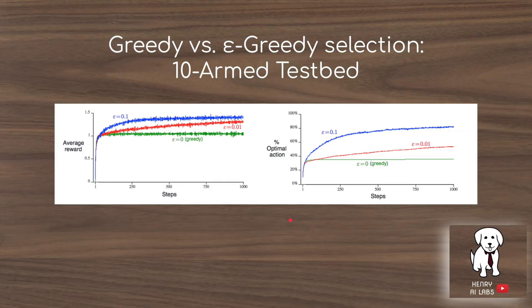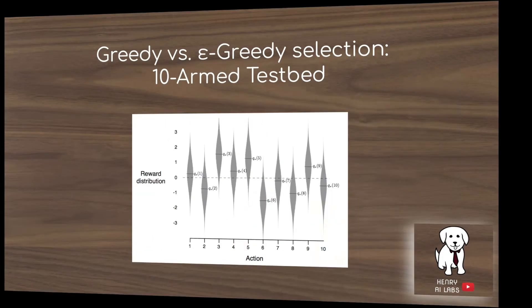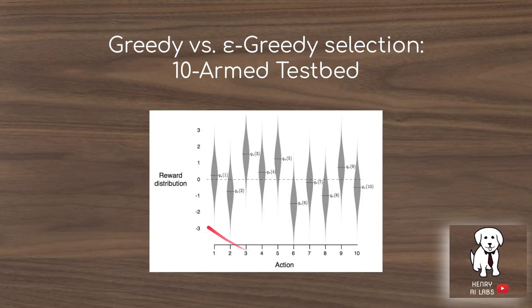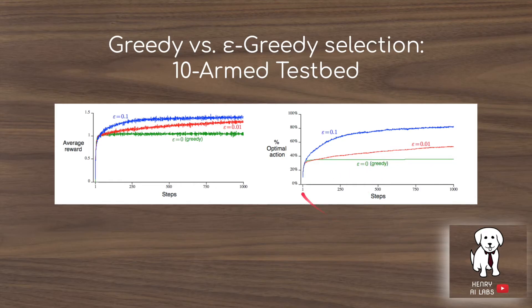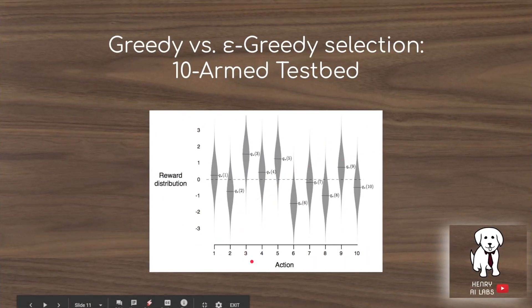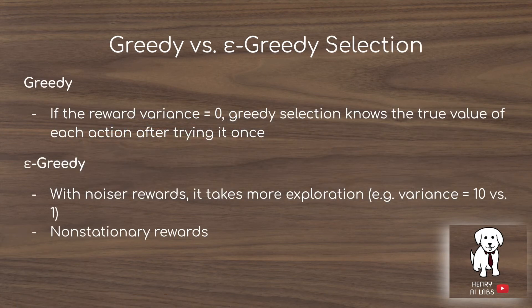Comparing greedy versus epsilon greedy on the 10-arm testbed, average reward is best when epsilon equals 0.1. This epsilon value dictates how often the algorithm samples random actions rather than exploiting the learned best action. The chart also shows the percentage of time each algorithm selects the optimal action. Greedy is advantageous when reward variance is zero — it only needs to take an action once to know its true value — but epsilon greedy performs much better with noisy or non-stationary rewards, since it will revisit previously low-valued actions whose distributions may have changed.